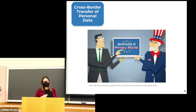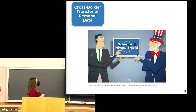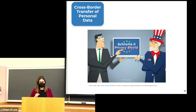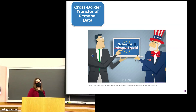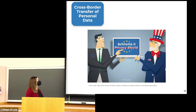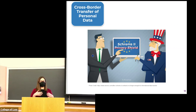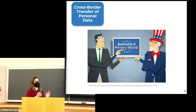One more issue is cross-border transfer of personal data, which has recently become very difficult. The Court of Justice of the EU struck down the so-called Privacy Shield, a framework that had provided the possibility of lawful transfers from Europe to the U.S. This happened because the court is of the opinion that the U.S. does not provide an adequate level of protection for personal data transferred from Europe to the U.S. However, there is some hope, as the European Commission and the U.S. recently announced that a new framework may be implemented in the future.